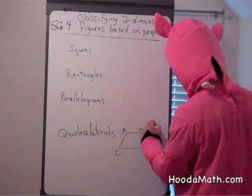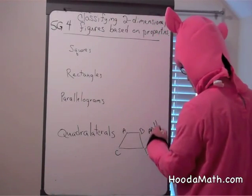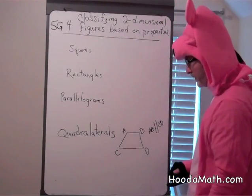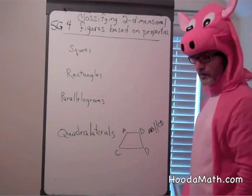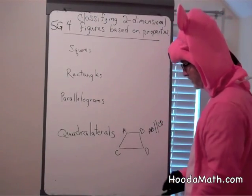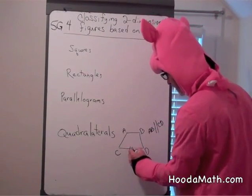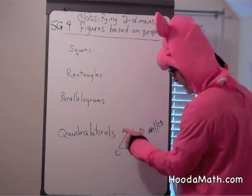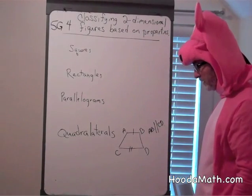AB is parallel to CD. A parallelogram could be a trapezoid, but not all trapezoids are parallelograms because, as you can see, AB is not the same length as CD.